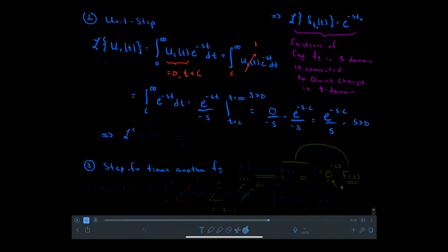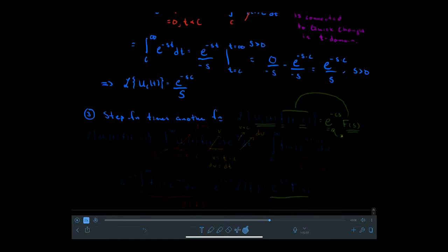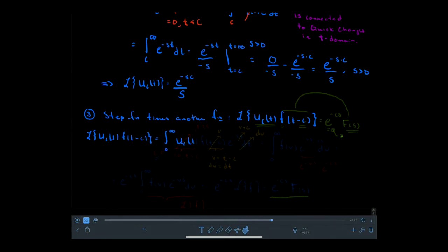The Laplace transform of the step function gives an exponential factor connected to abrupt changes in the time domain, divided by s. For the last result, we'll take the Laplace transform of u_c(t) times f(t - c) — some arbitrary function shifted c units in time. When I take this Laplace transform, I get an integral from 0 to infinity of u_c(t) times f(t - c) times e^{-st} dt. Since u_c is 0 for t less than c, I start the integral at c, giving the same effect.